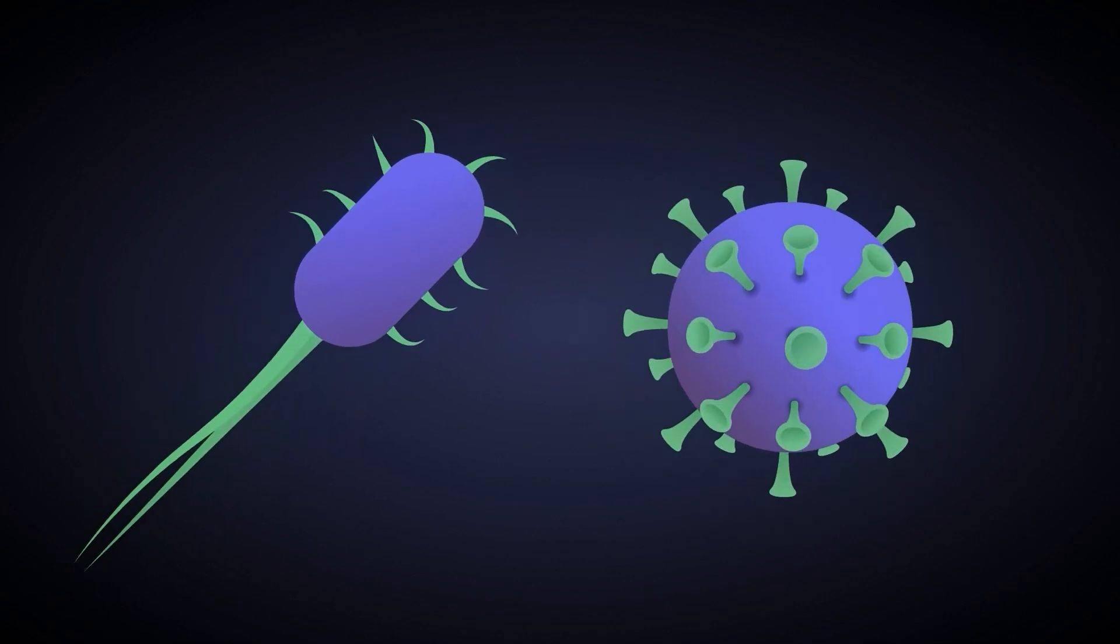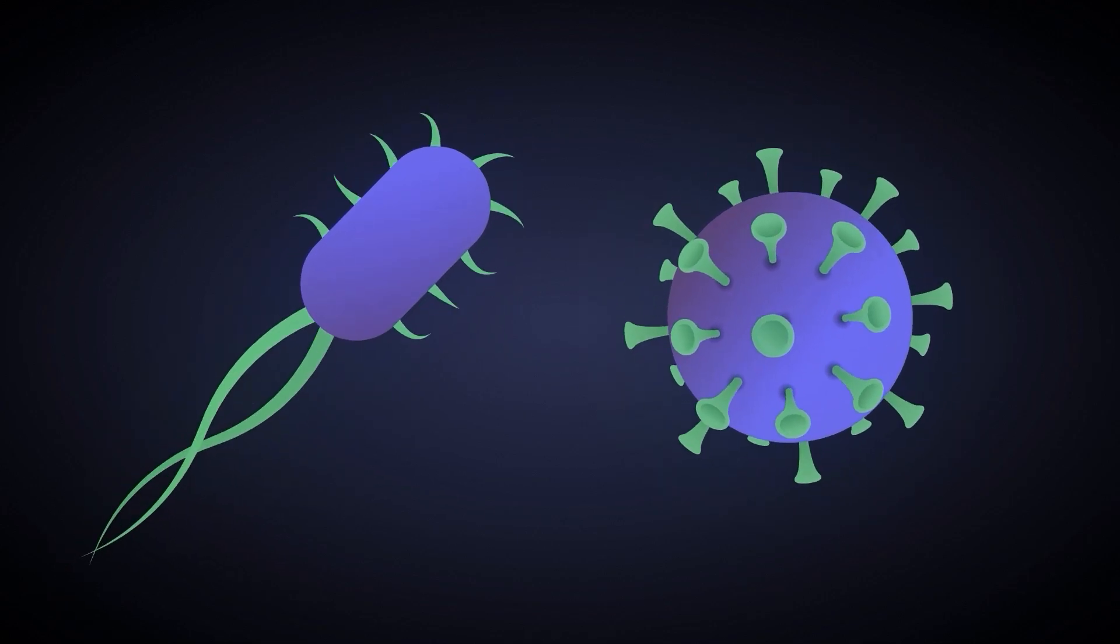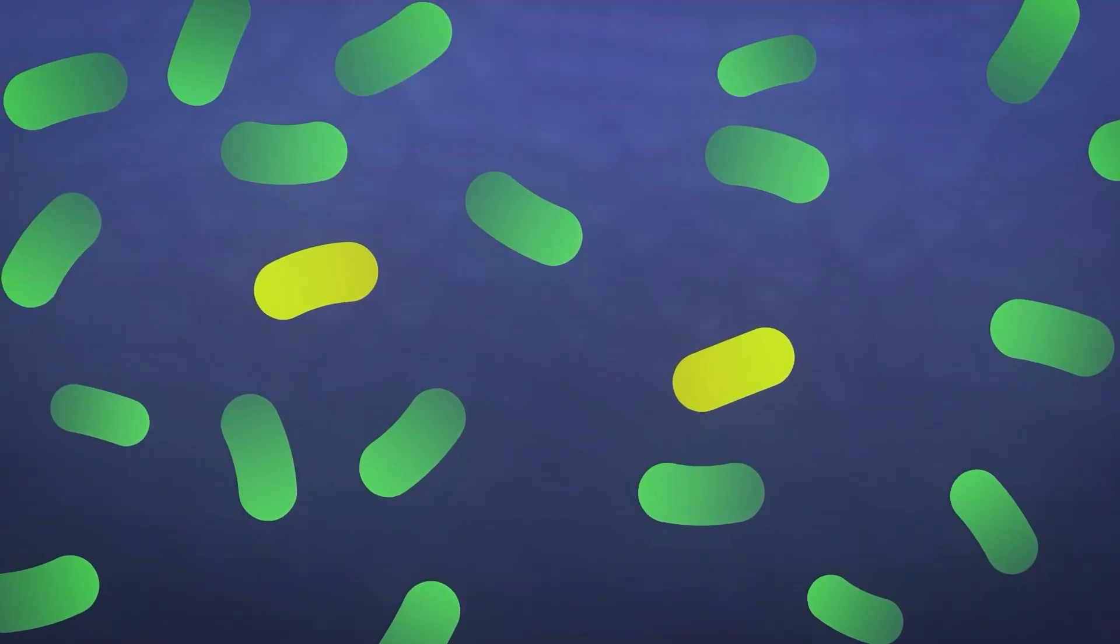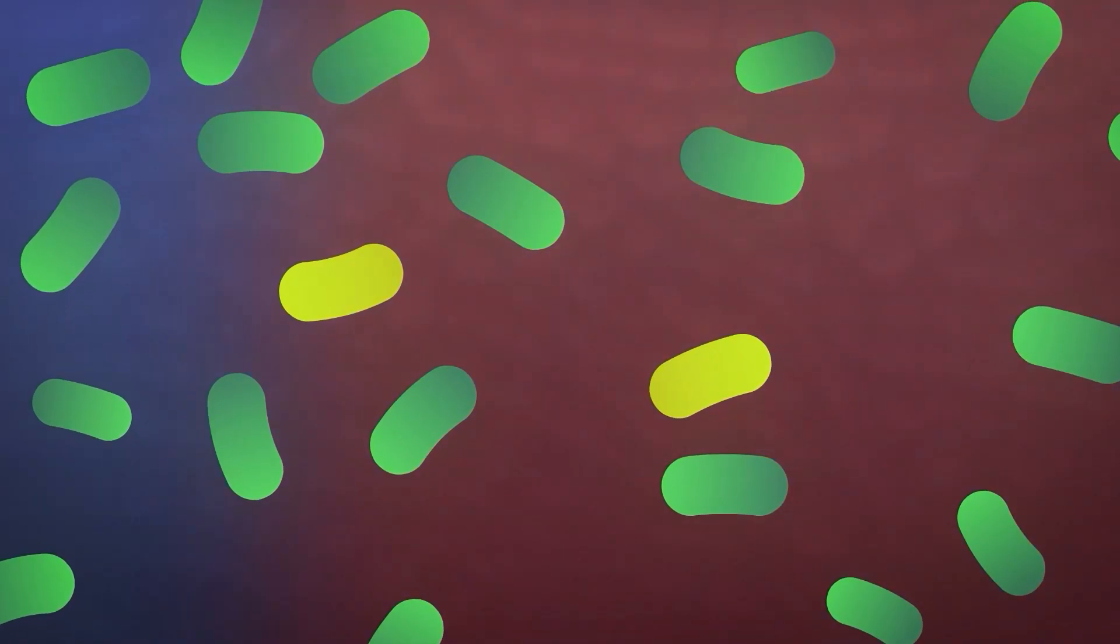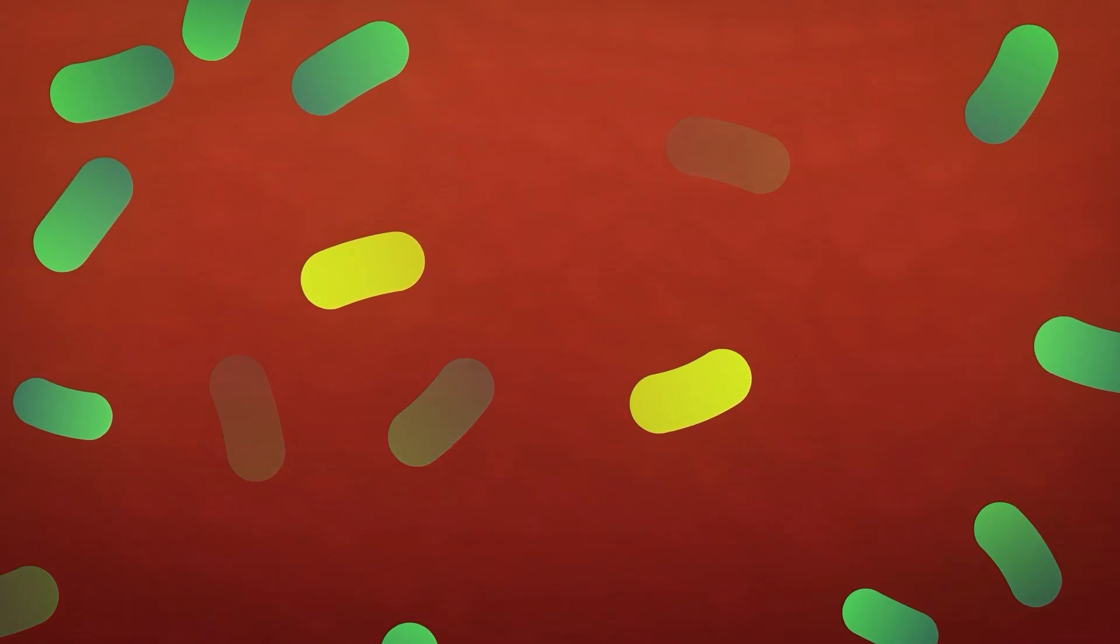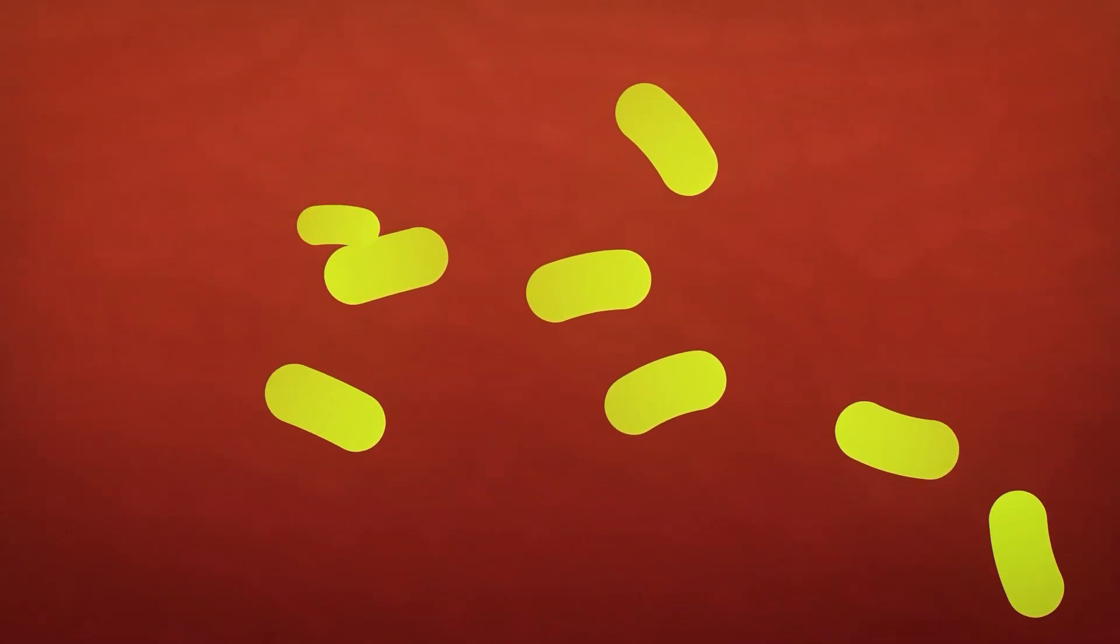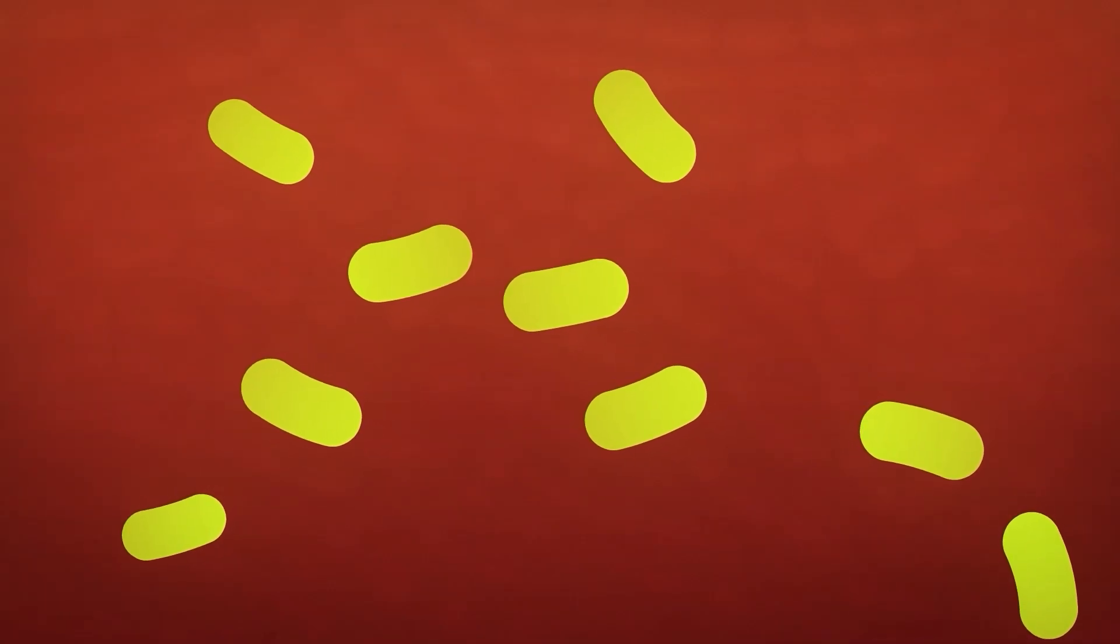Similar processes occur at the microscopic level. Bacteria and viruses whose reproduction rate is fast experience relatively rapid evolution. For example, as a result of the use of antibiotics, selection pressure was exerted on bacteria, and many of them developed resistance to it.